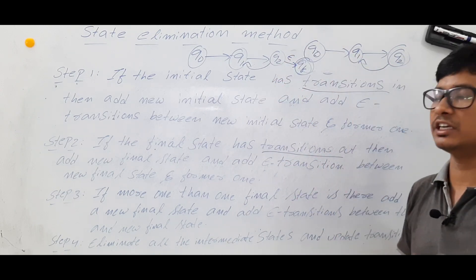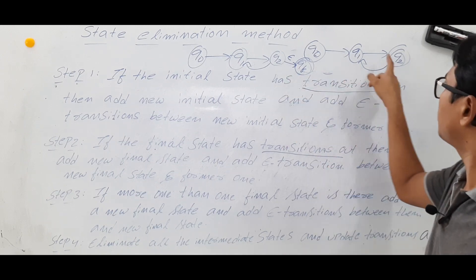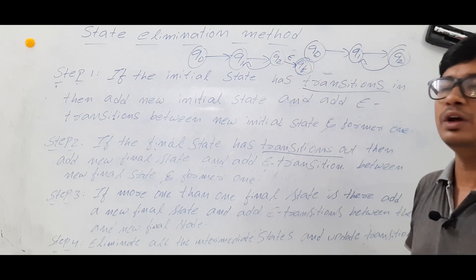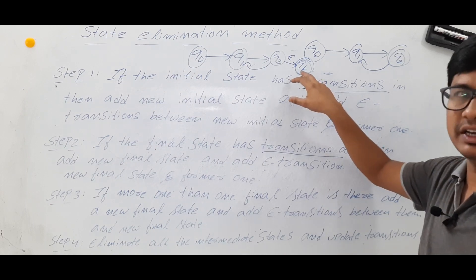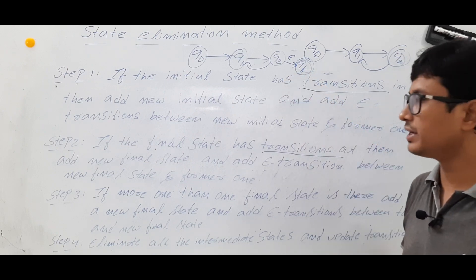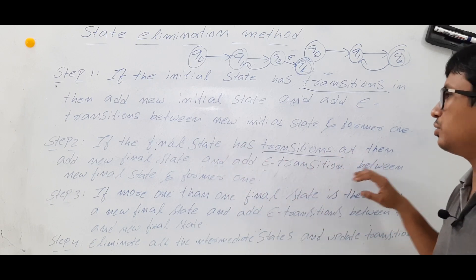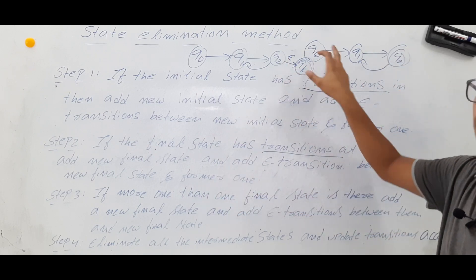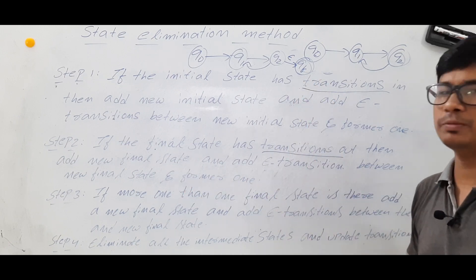Now the old state q2 will not act as a final state anymore. Previously q2 was the final state, but now it will not act as one. From q2 an epsilon transition goes to the new final state qf. So after the change, q2 has no outgoing edge and qf has no outgoing edge. Step two: if the final state has an outgoing edge, add a new final state and an epsilon transition between the new final state and the former one.